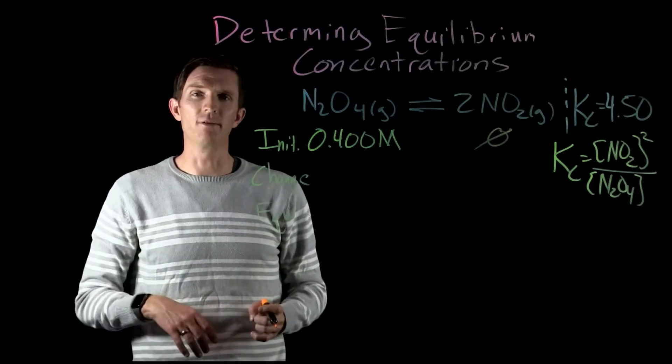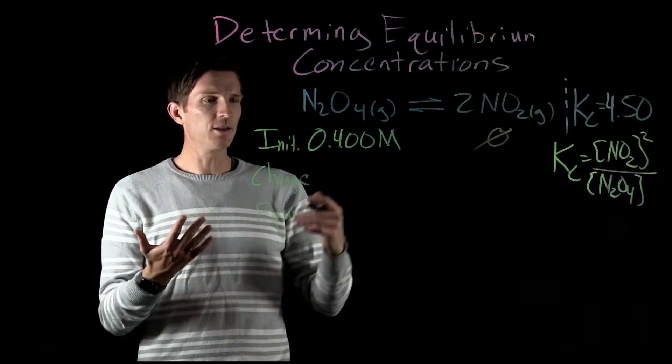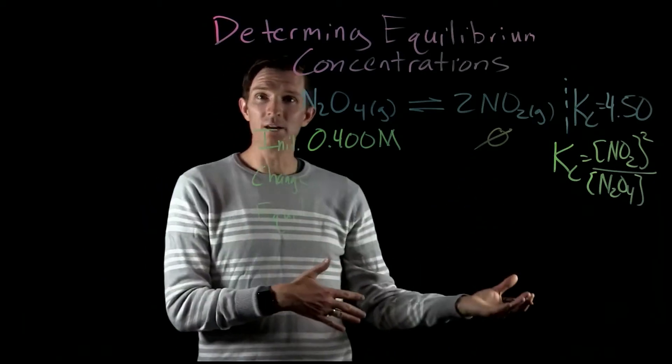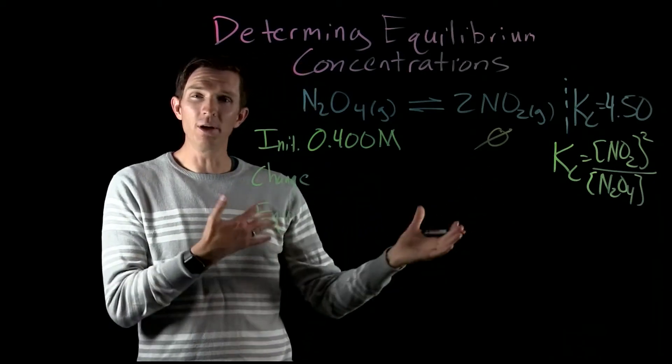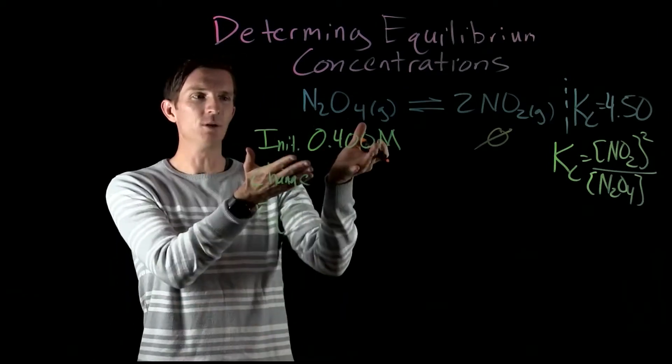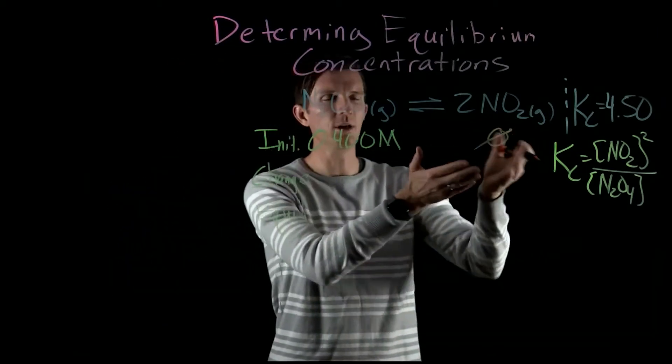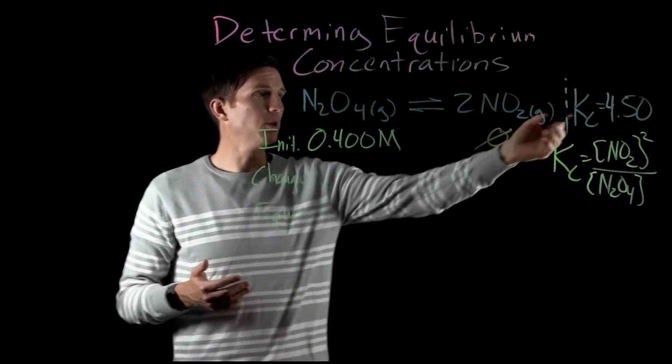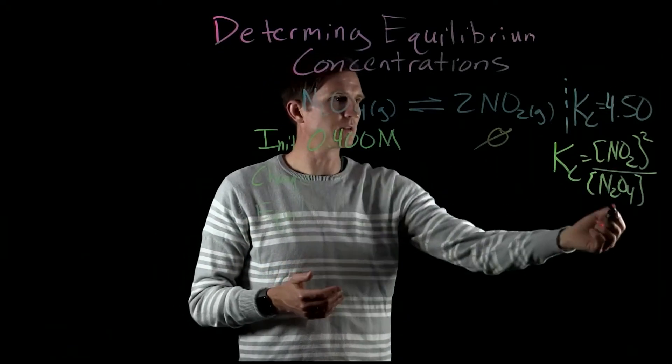So if we look at this we'd say, well, how much is it going to decrease by? Well we don't know, that's our goal, we need to figure out how much is it going to decrease by. If it was just a one-way reaction this would decrease by 0.4 and this would increase by 0.8, but it's not. We know at equilibrium the ratio between our products and reactants is 4.50.